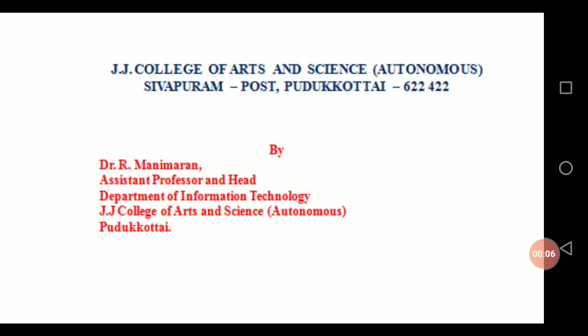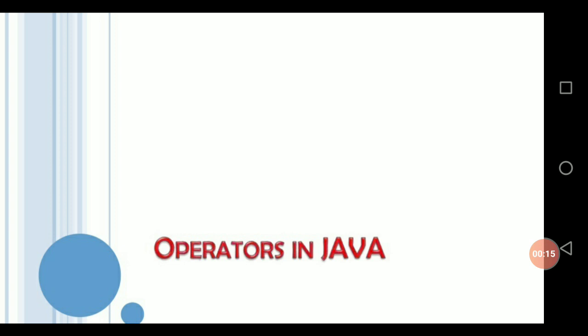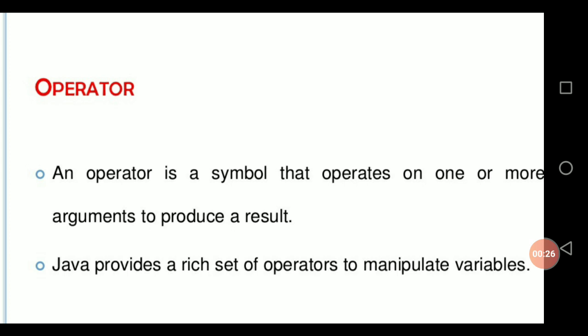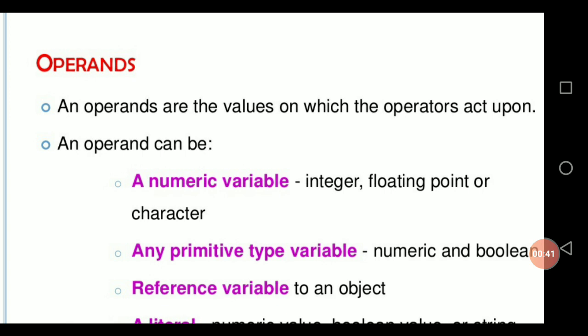Today I am very happy to discuss about operators in Java. What is an operator? An operator is a symbol that is easier to perform some calculations and evaluation. In Java, an operator is a symbol that operates on one or more arguments to produce a result. Java provides a rich set of operators to manipulate variables. A Java operator requires some operands.